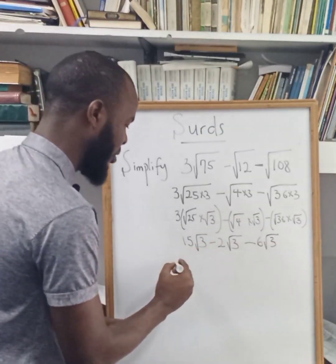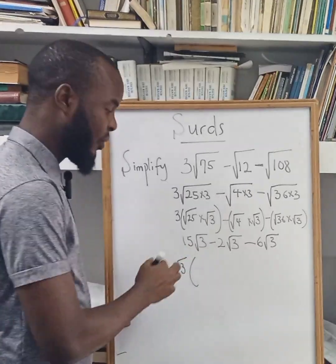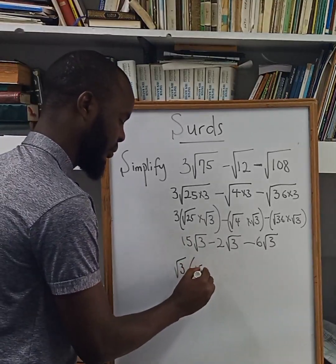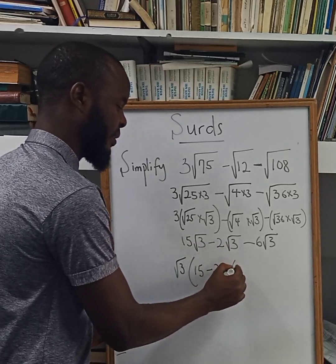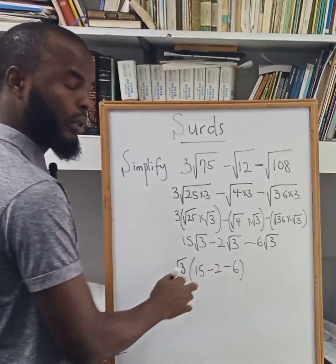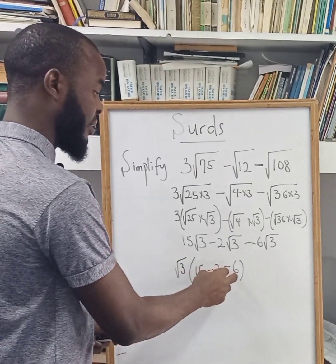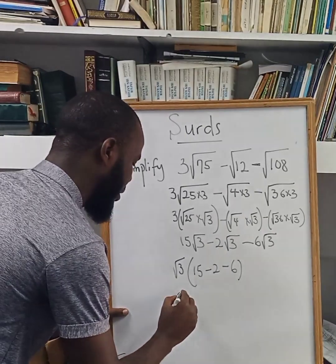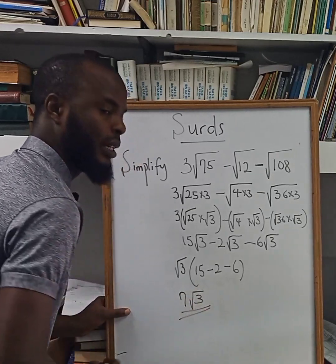So we can easily factor out the root 3, and we are left with root 3 times the bracket: 15 minus 2 minus 6. Now 15 minus 2 gives 13, and 13 minus 6 gives 7. So our final answer is 7 root 3.